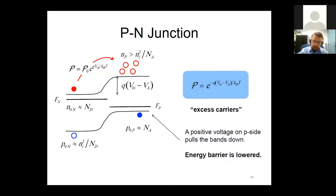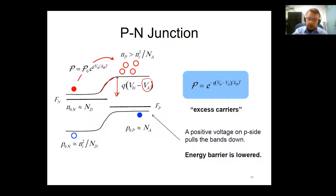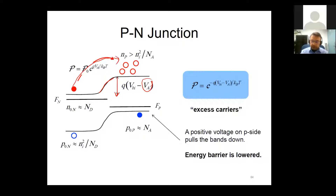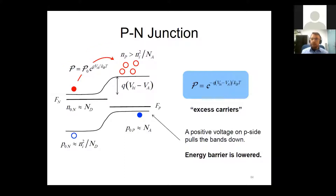To enable conduction, we apply an external voltage to fight back against this barrier. We lower the barrier so electrons can hop over. Electrons, the majority carriers on the n-side, hop to the p-side and become minority carriers there. It's this minority carrier injection into the other side that creates current in the diode — and this will differ for solar cells, as we'll see.